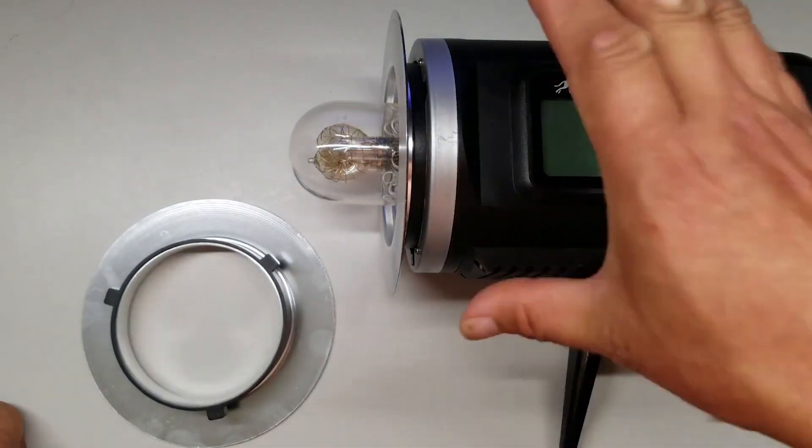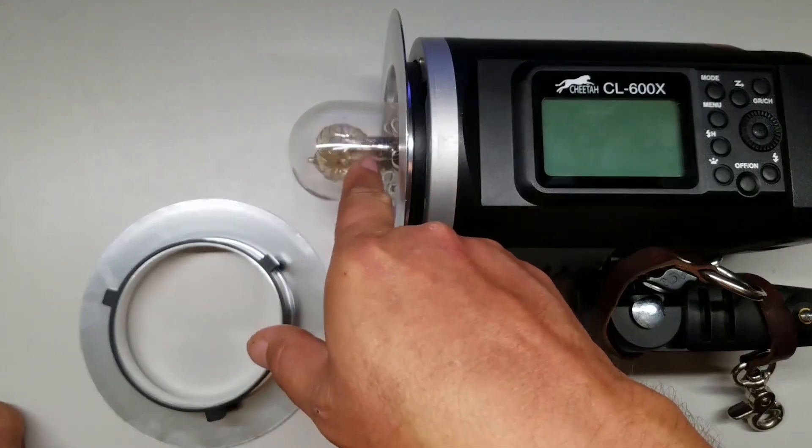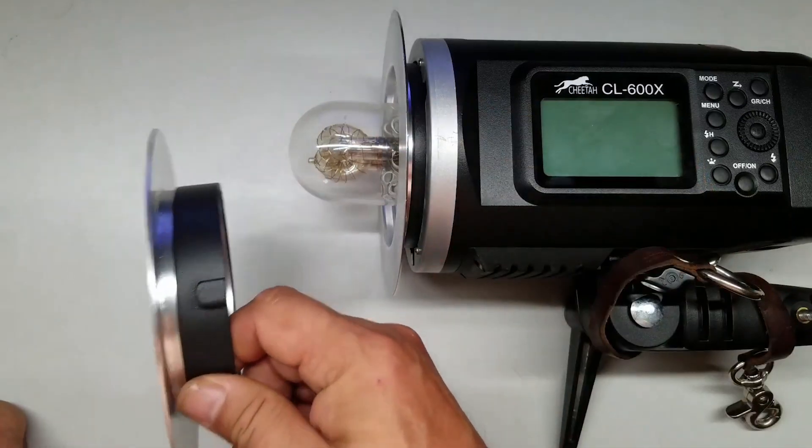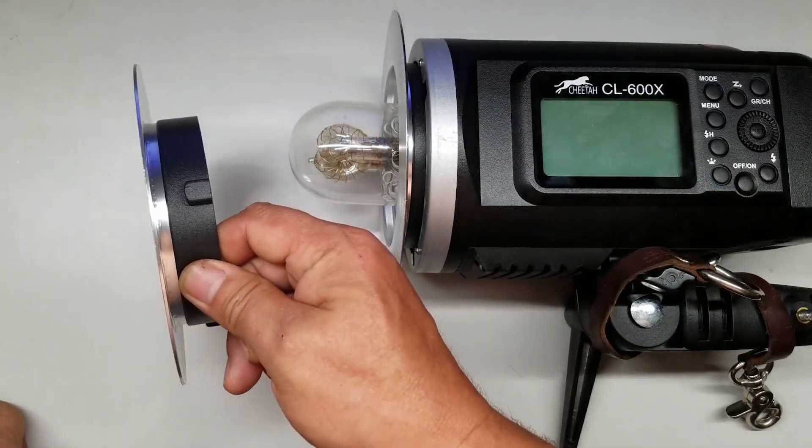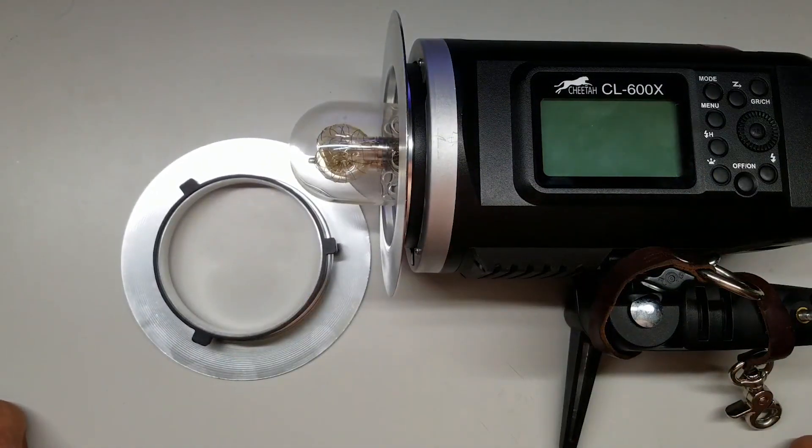So if you want the maximum performance out of this bulb inside your modifier, then I would suggest getting the new Cheetah Stand low-profile insert ring. My name is Scott with Sean's Photography and thank you for watching.